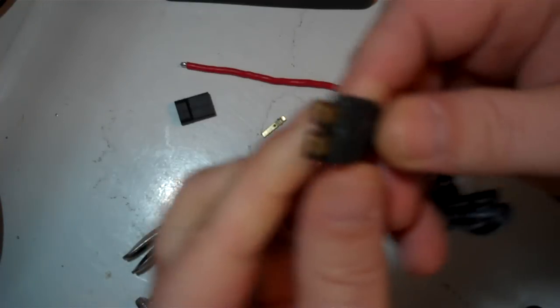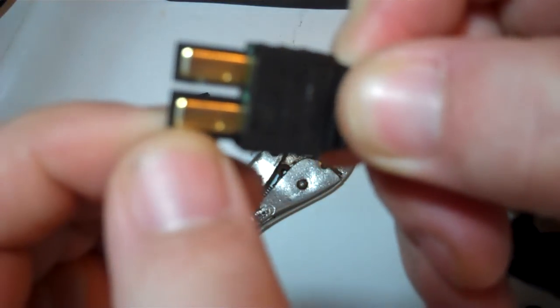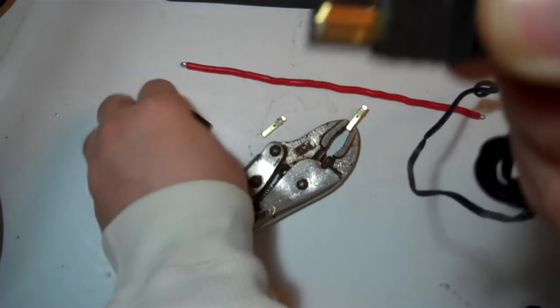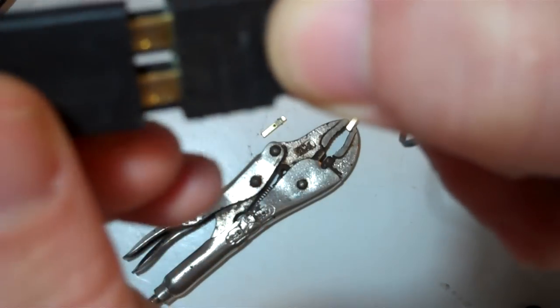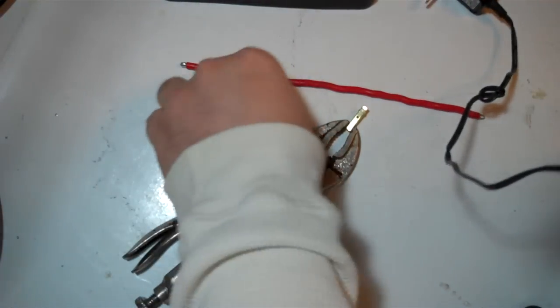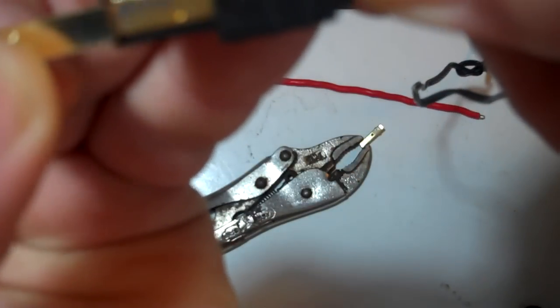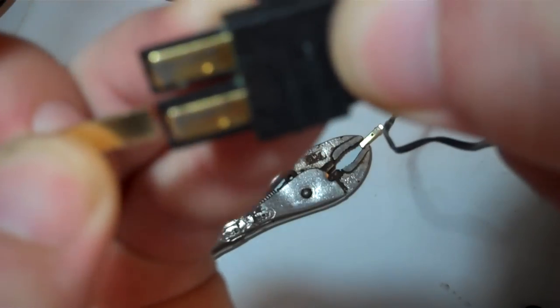First thing you want to address - if you look right here at the real Traxxas genuine plugs, right at this edge here, there's a little taper. That taper helps when you connect the two pieces together. That taper allows the one tab to slide over the other tab easily when being connected.